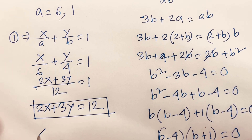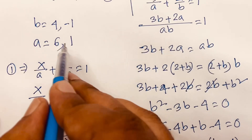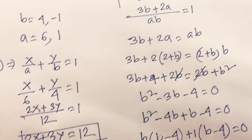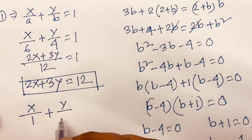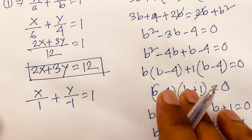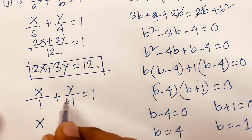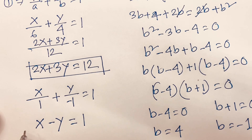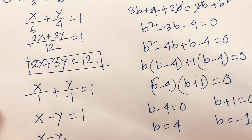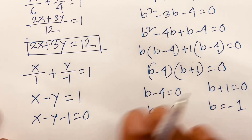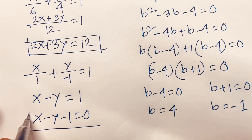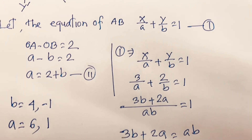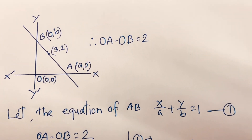In the other case, a = 1 and b = -1, so the equation is x/1 + y/(-1) = 1. This gives x - y = 1, or x - y - 1 = 0. That is our second answer. Thank you all. If you enjoyed this video, please subscribe to my channel and like this video. Goodbye.